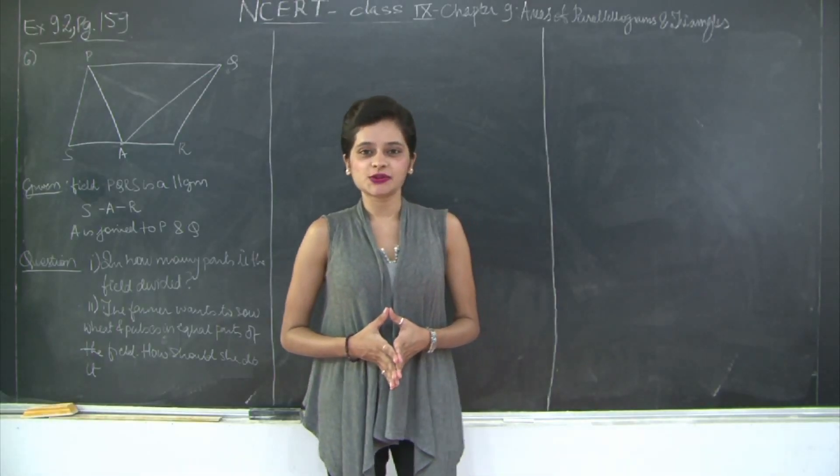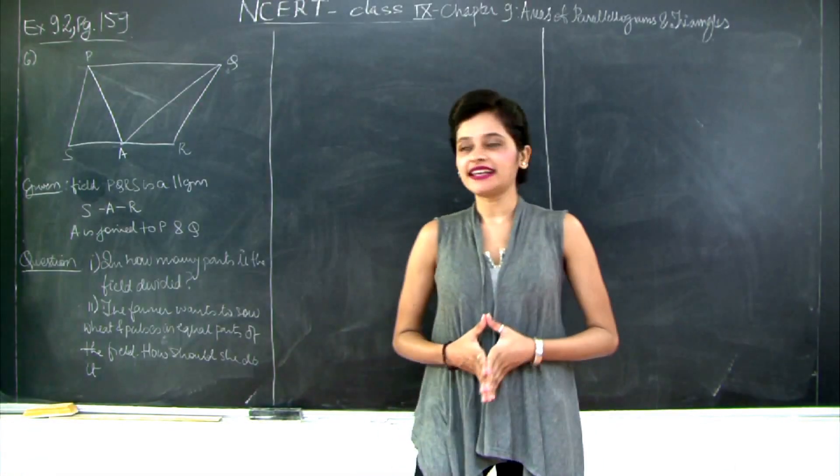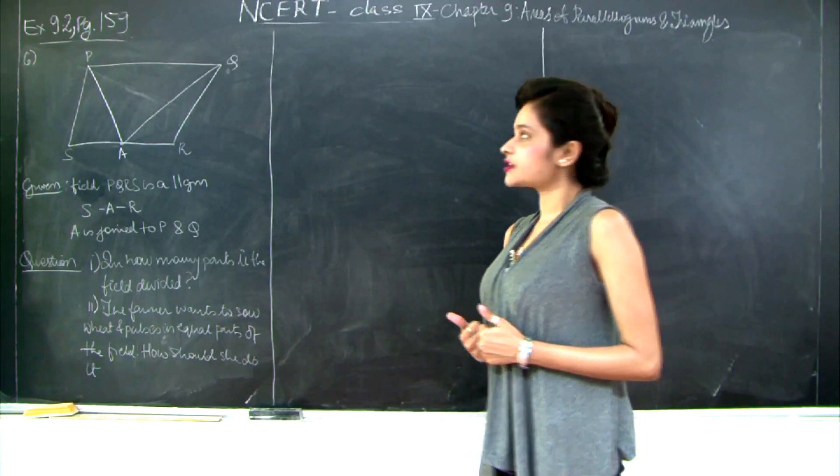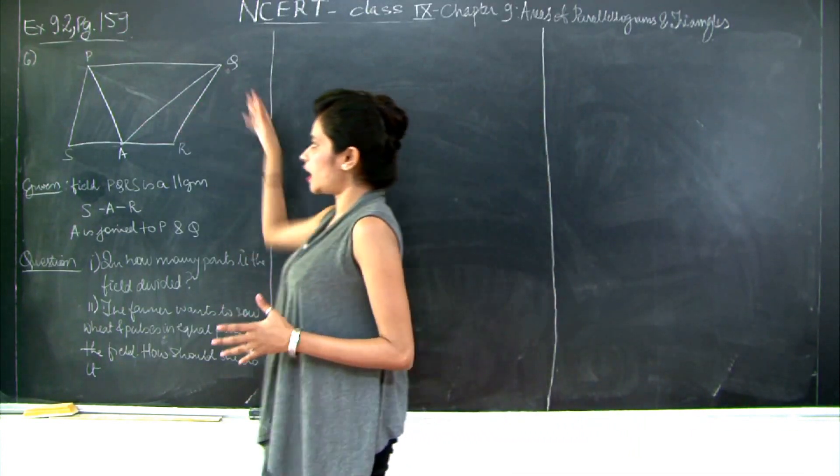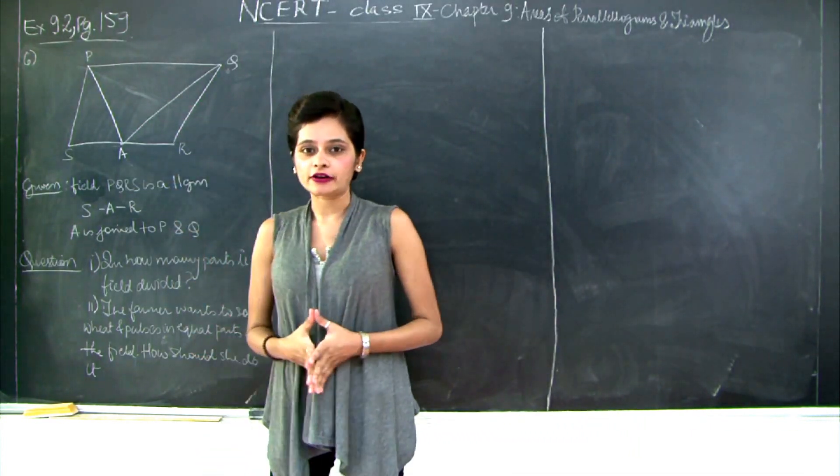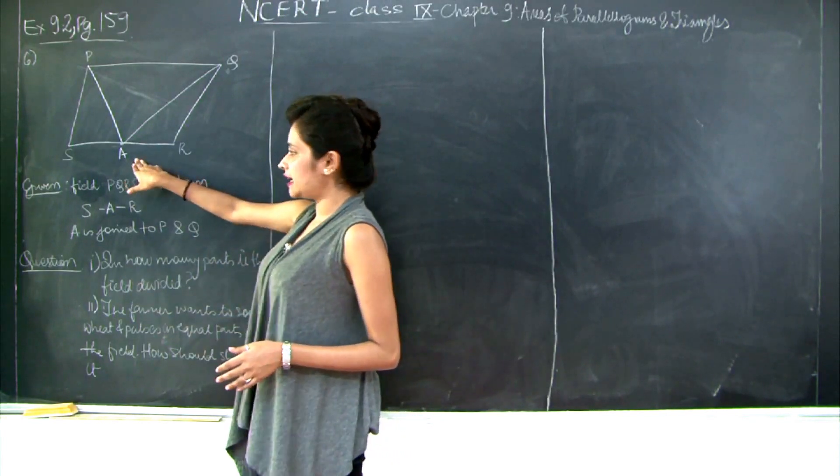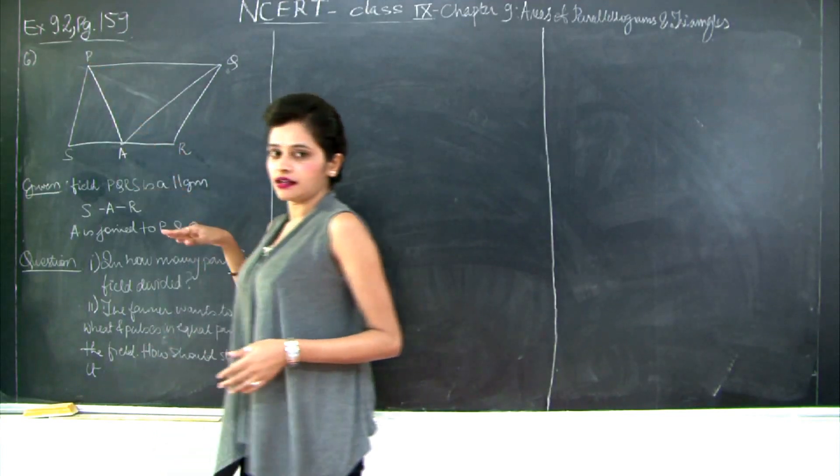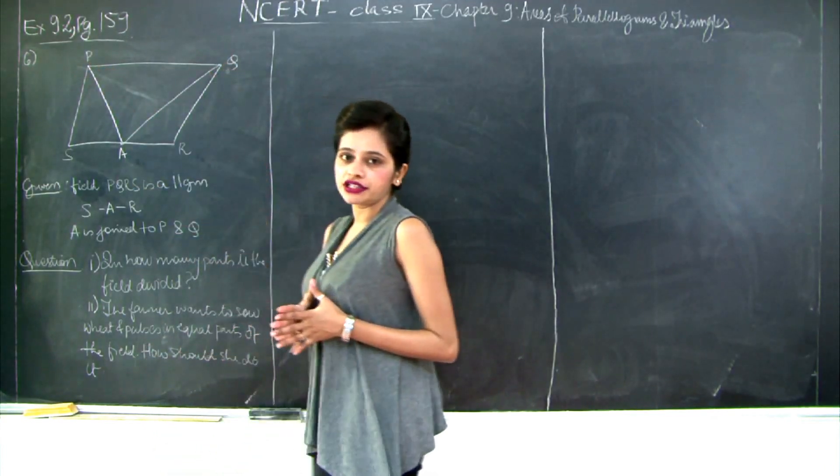Hello students, let us continue with exercise 9.2 of chapter 9, the last question which is question number 6. It's given that we have a field PQRS which is in the form of a parallelogram and there is a point A on the line SR such that A is connected to P and A is connected to point Q.